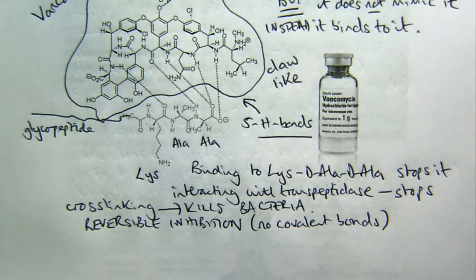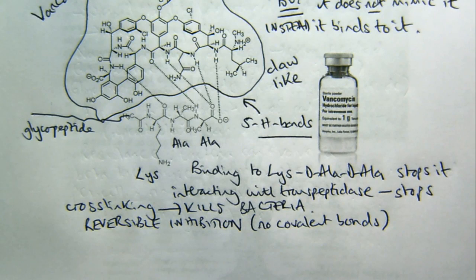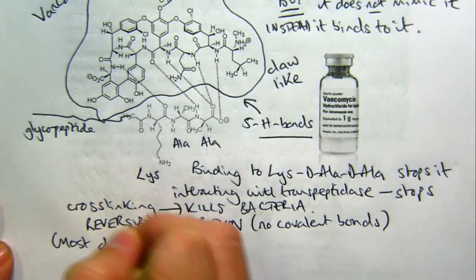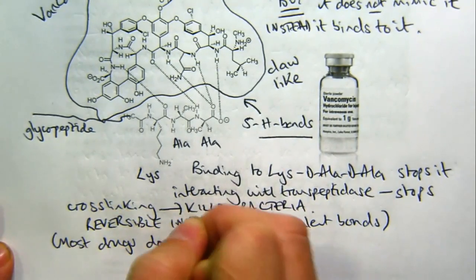There are no covalent bonds this time, whereas penicillin was covalently bound to transpeptidase. You might be tempted to think that reversible inhibition is somehow not as good as irreversible inhibition, but don't get tempted by the language. Vancomycin is a much, much better drug than penicillin — it works much more effectively. The reversibility is kind of irrelevant; it's a strong interaction, and it's a big molecule that really stops transpeptidase getting involved. Whether reversible or irreversible doesn't matter as to how good it is — it's simply a description of the mechanism. In fact, most drugs you would meet in medicinal chemistry are reversible binders, so this is more of a normal situation.